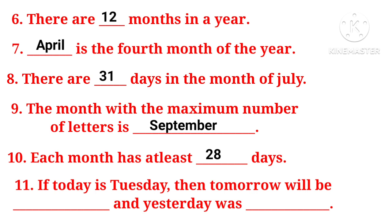If today is Tuesday, then tomorrow will be dash and yesterday was dash. Agar aaj Tuesday hai, toh kal kya hooga? It is Wednesday. And yesterday was? Tuesday se ek din pehle kya aayega? It is Monday.